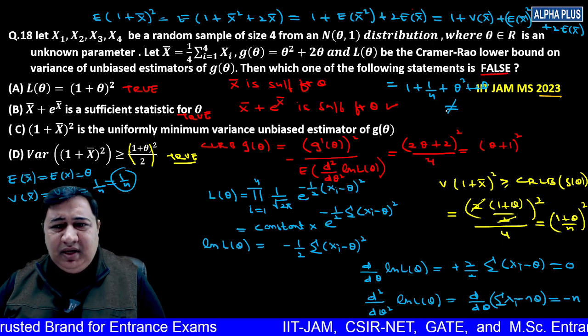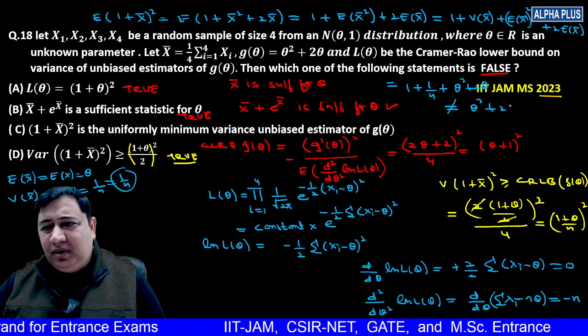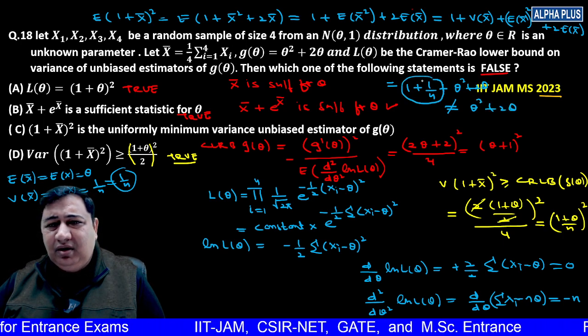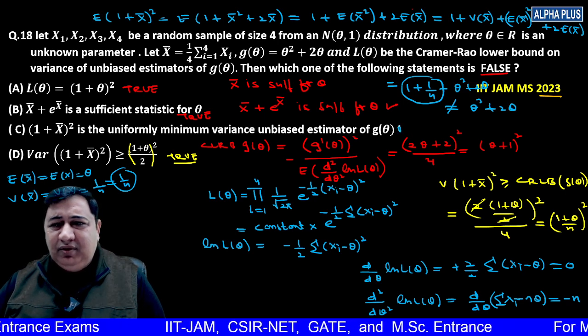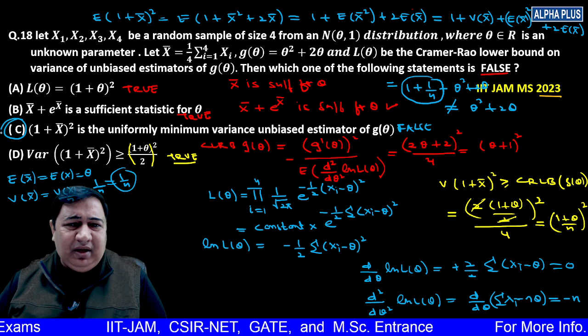This is not same as g(theta), which is theta squared plus two theta, because there's this extra term here. So this is the only term which is false. Your answer is C for this question.